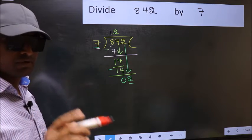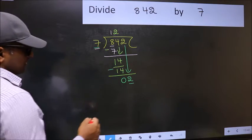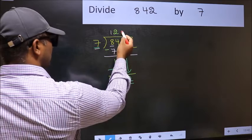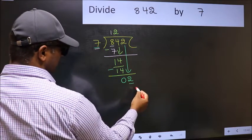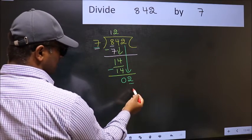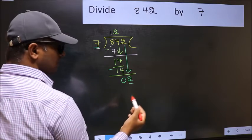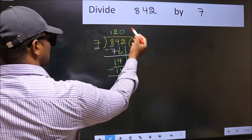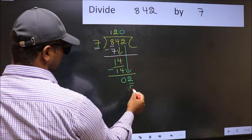Instead, what you should think of doing is, which number should be right here. If I take 1, we will get 7. But, 7 is larger than 2. So, what we should do is, we should take 0. So, 7 into 0, 0.